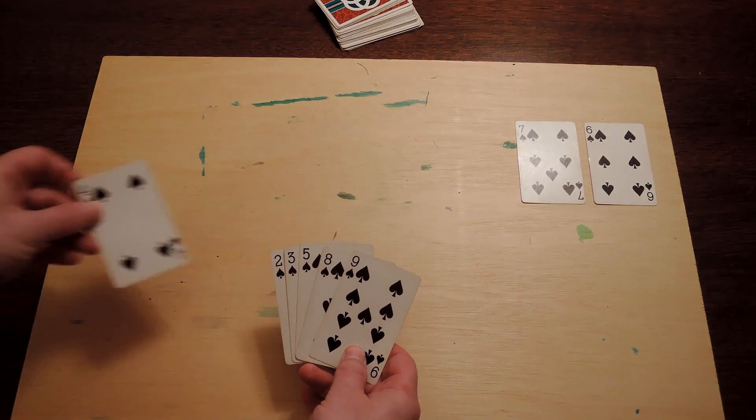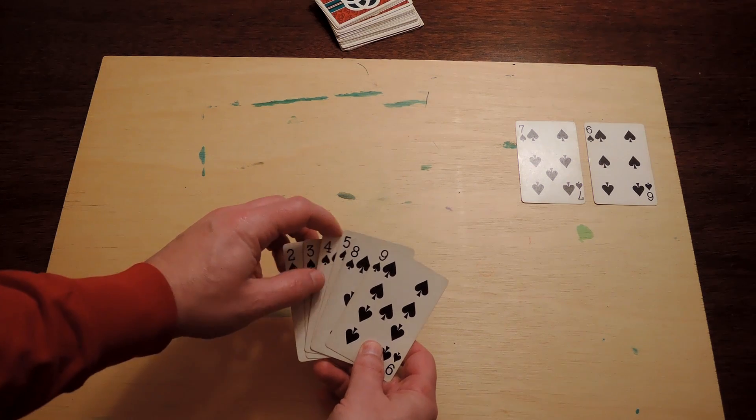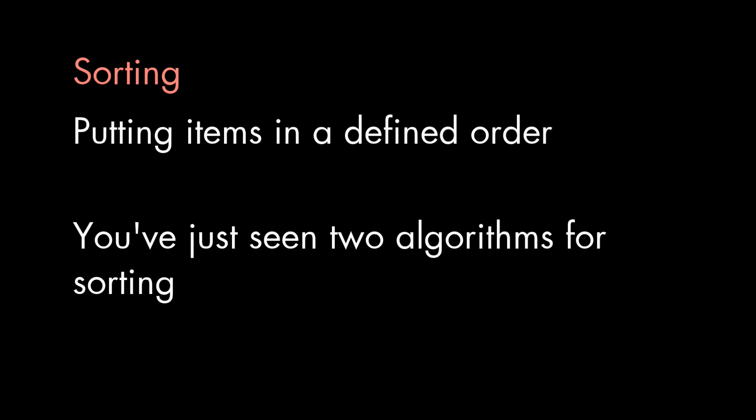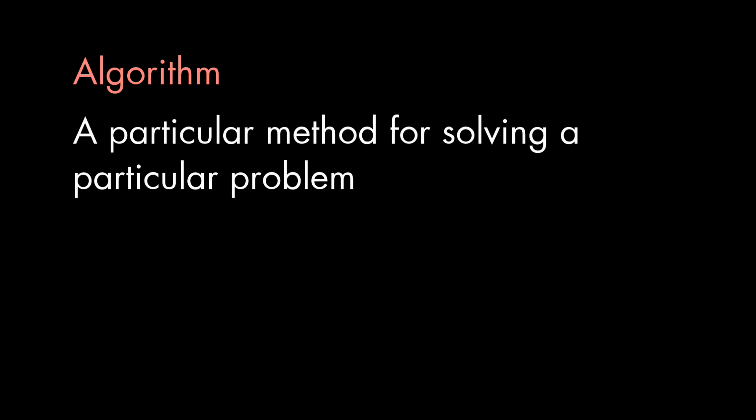Now, in computing, putting things in a defined order is called sorting. The two methods I just described are two different algorithms for sorting. You see, that's all an algorithm is. It's a particular method for solving a particular problem.